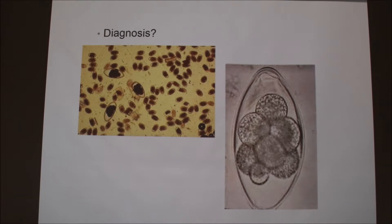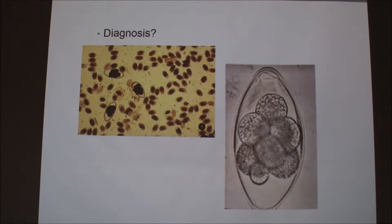The fecal material is processed and then looked at under a microscope. Some people don't stain because it introduces artifacts. Artifacts are things you see under the microscope that aren't really there, or weren't in the sample, or are misleading — you have to be careful of artifacts.